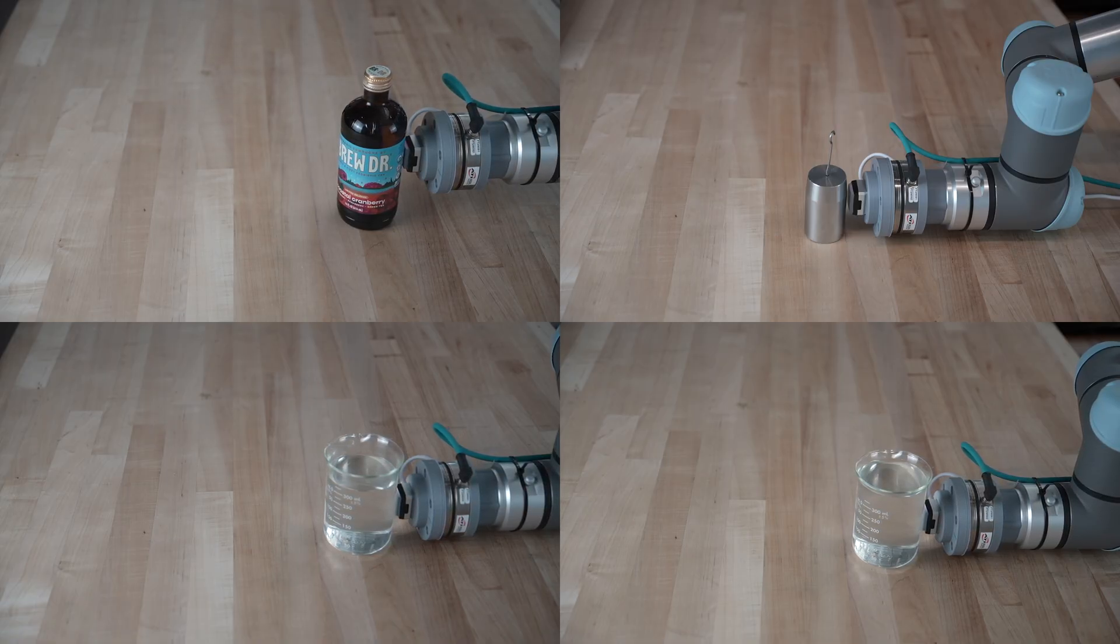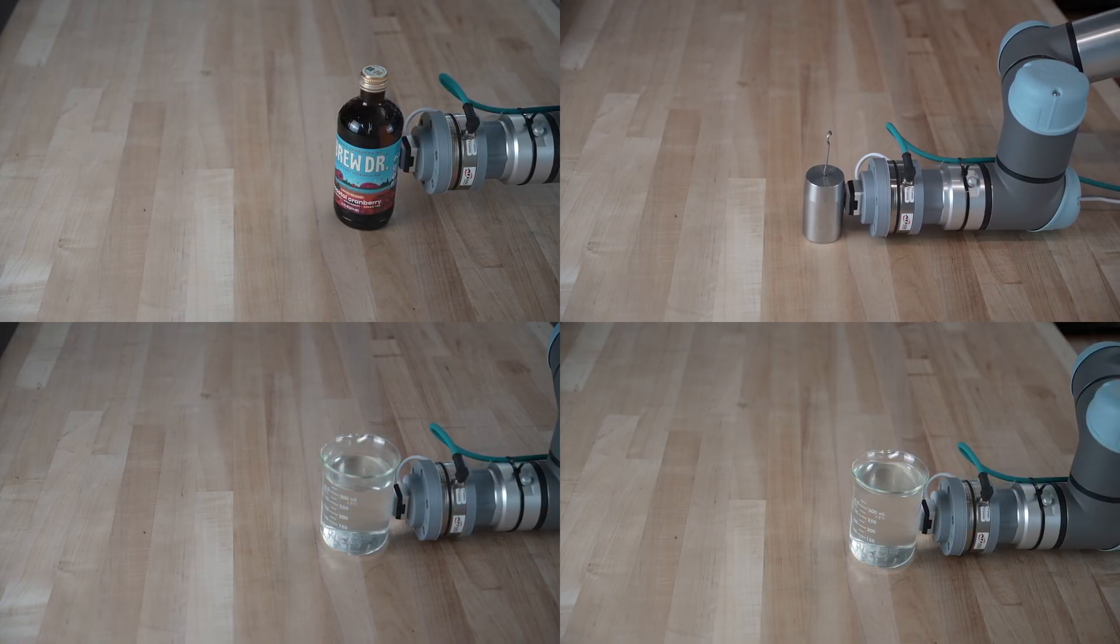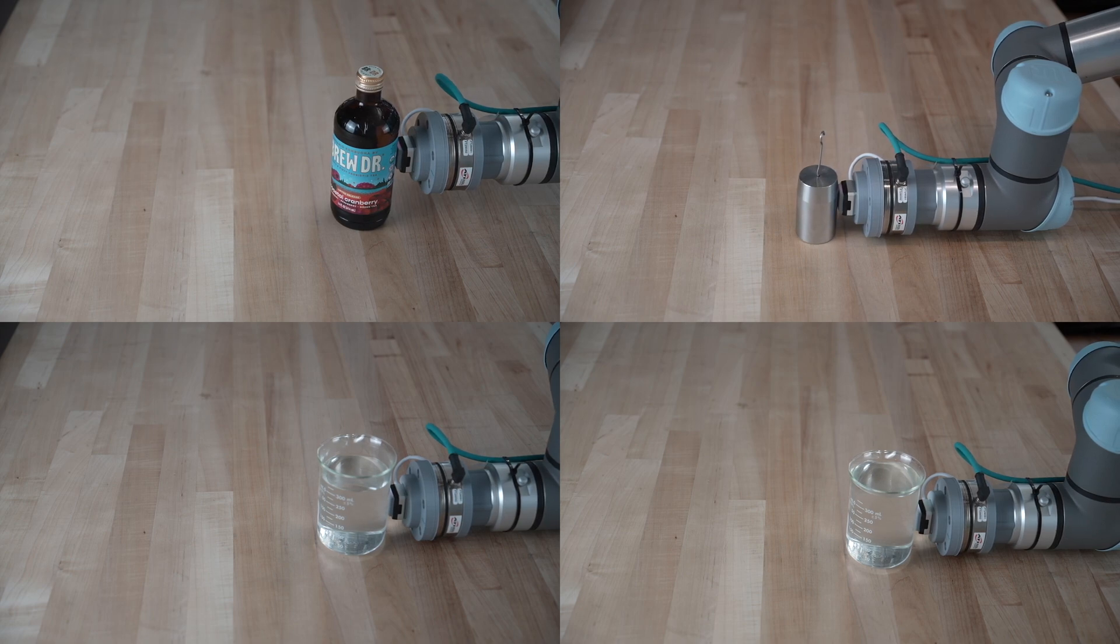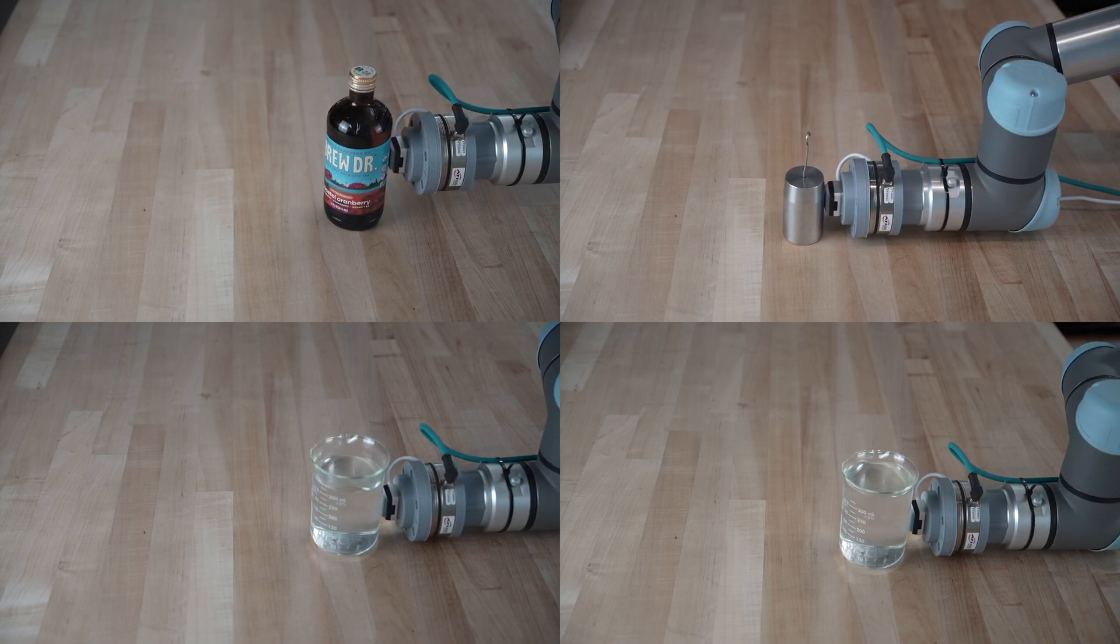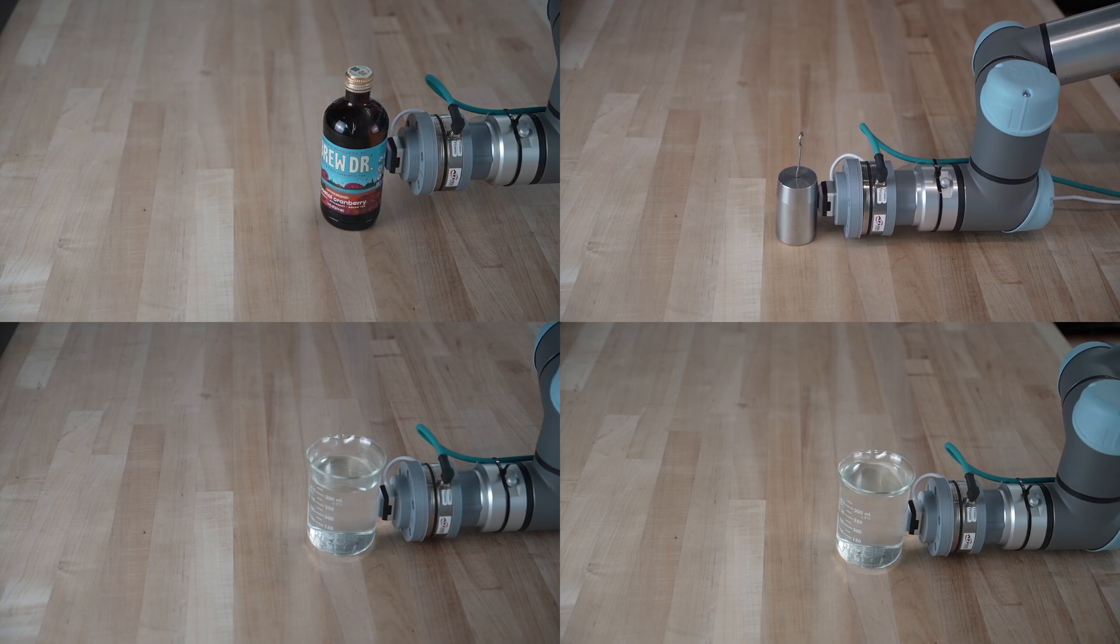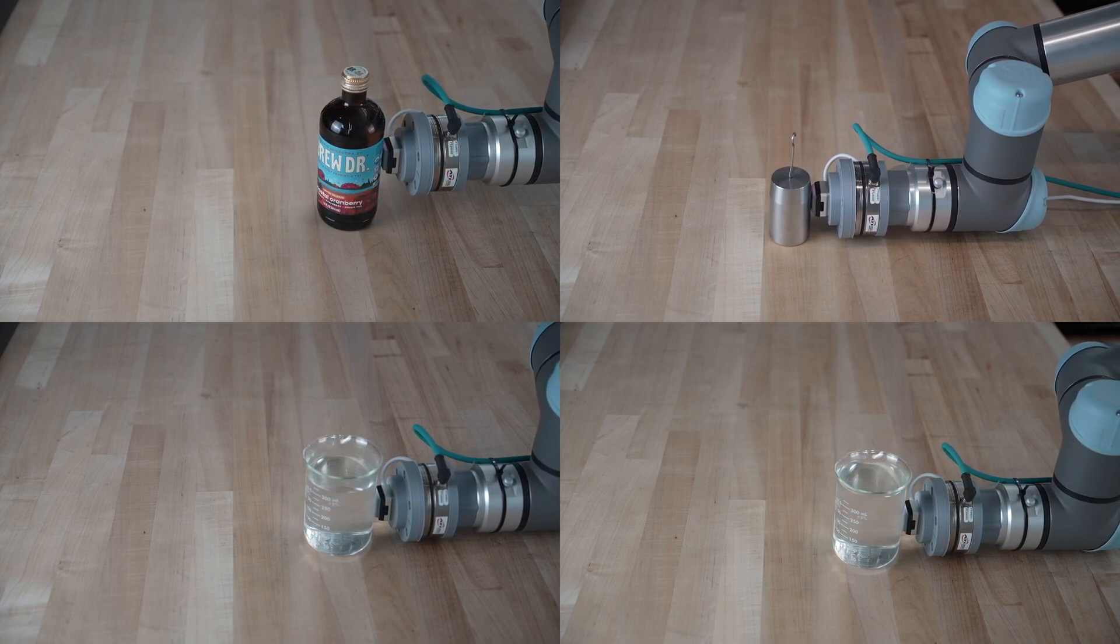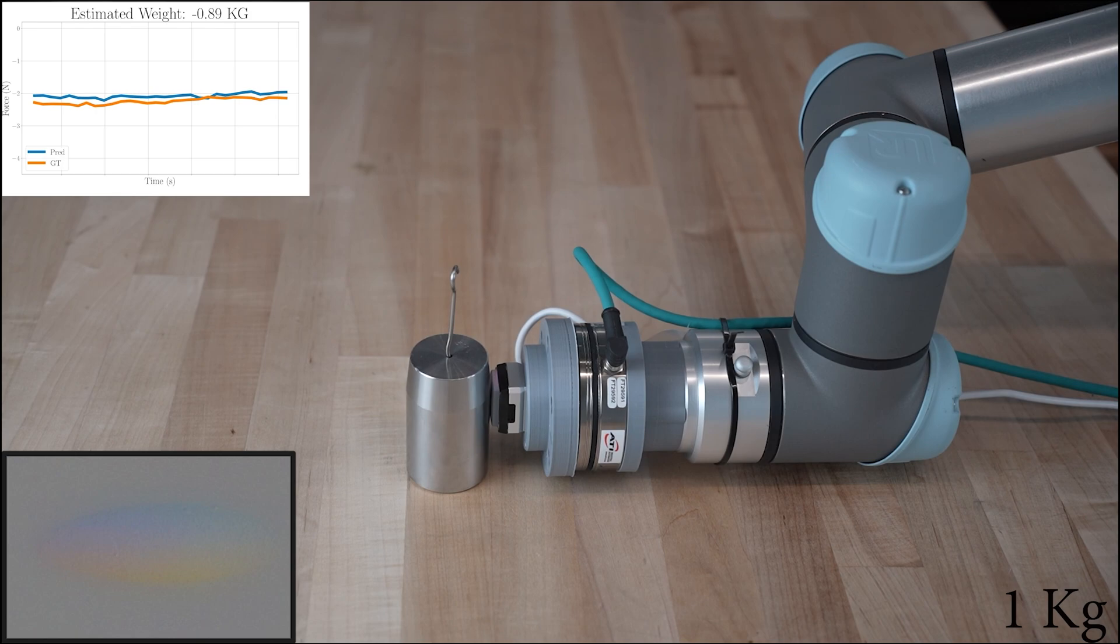In our next experiment, we attempted to weigh objects by pushing them, taking into account the friction between the objects and our desk. We observed that we could estimate the weight of the object with a 10% error margin across four different objects made from various materials and textures.